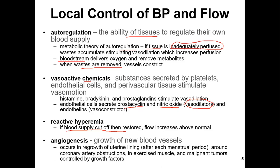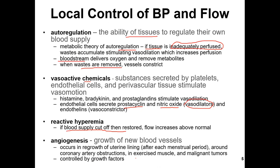Next one is angiogenesis — the growth of new blood vessels. This is very important for many diseases. For example, a cure in regrowth of uterine lining after each menstrual period — this ability for angiogenesis allows our menstrual period to proceed normally. Or around the coronary artery after obstruction — for example, some infarction happened, and after that, this ability for angiogenesis, for growing new blood vessels, gives the ability to deliver oxygen normally to the heart muscles.